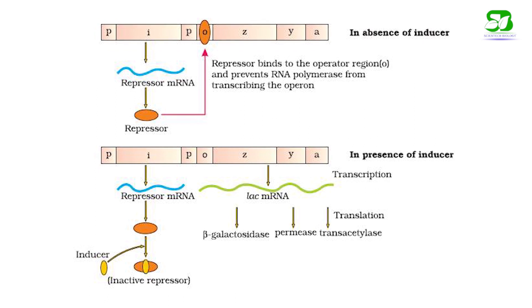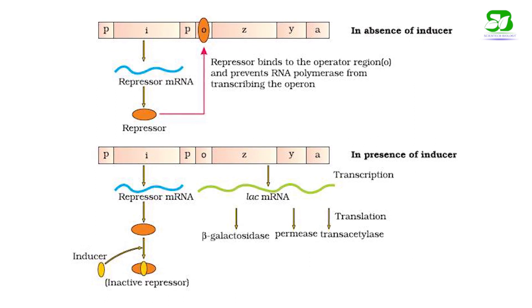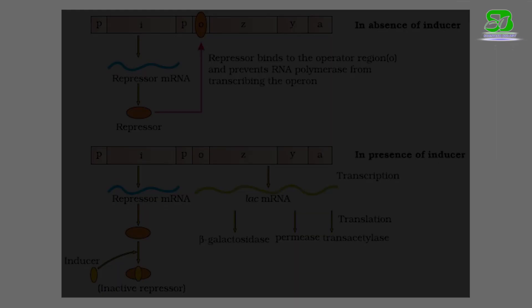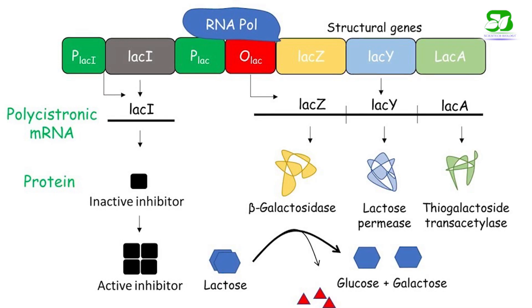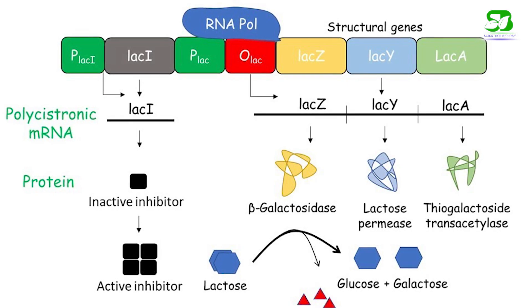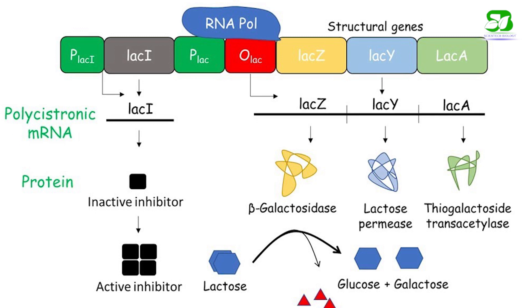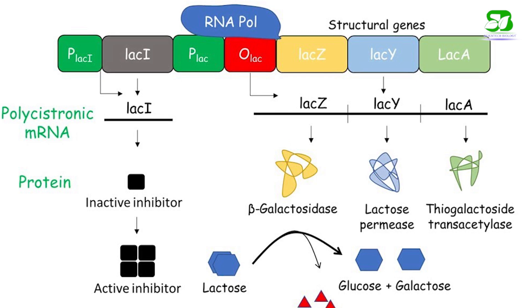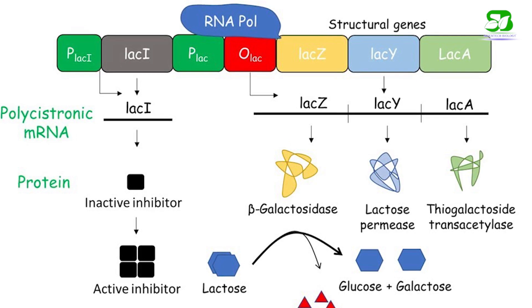Structural genes are the segments of DNA which carry codes for protein synthesis. For example, E. coli contains three structural genes: Z, Y, and A. Z codes for the enzyme beta-galactosidase, Y codes for the enzyme beta-galactoside permease, and A codes for the enzyme beta-galactoside transacetylase.